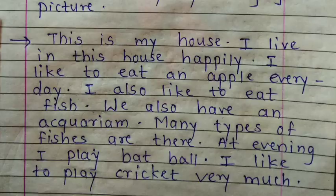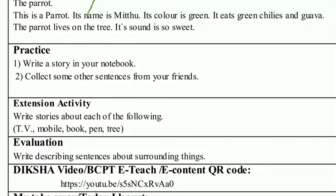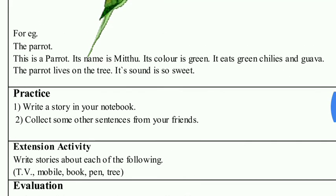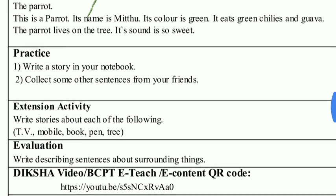You can write this neatly in your notebook for practice. In the practice section, the first question is: write a story in your notebook. There is a parrot story — write it as it is in your notebook. The second: collect some other sentences from your friends. Your friends may also have written new sentences about this activity — write those in your notebook too.